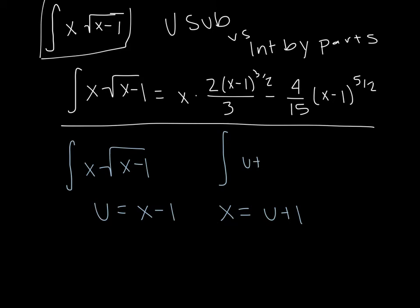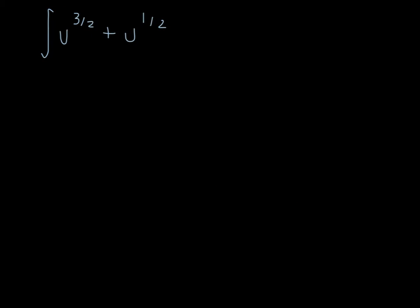So now we can rewrite our integral using u. We have u plus 1 times u to the 1 half. So now we just need to distribute our 1 half amongst both. So we get u to the 3 halves plus u to the 1 half. And you can separate these out now that we've got the plus sign in here, and we can integrate from there.